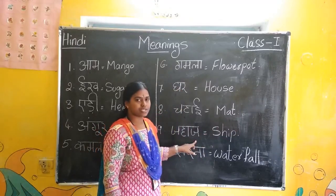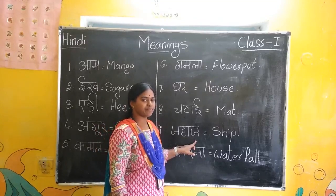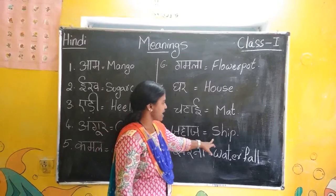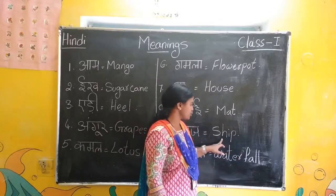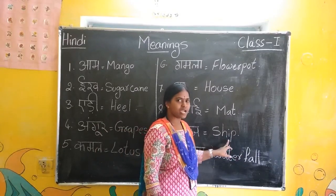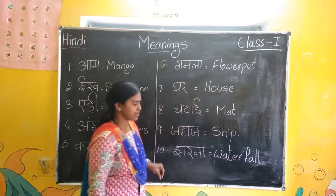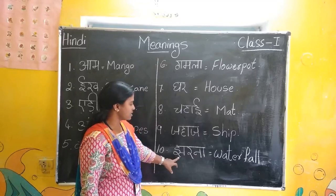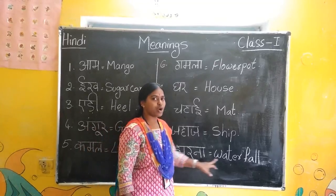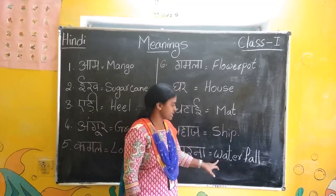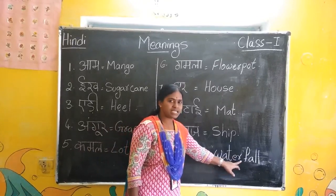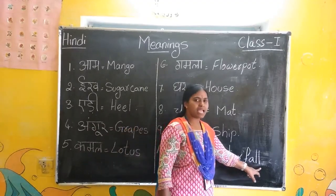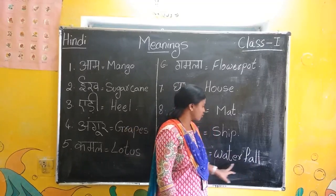Jahaj — Jahaj means ship. Not boat, ship. S-H-I-P, ship. Now next one: Jharana — Jharana means waterfall. W-A-T-E-R, water. F-A-L-L, fall. Waterfall.